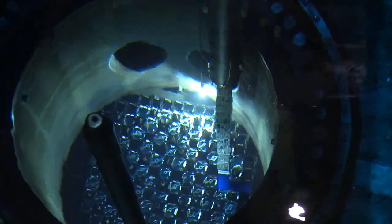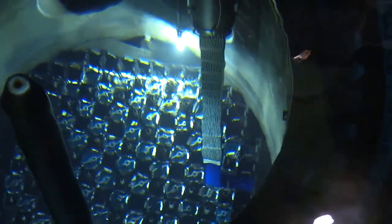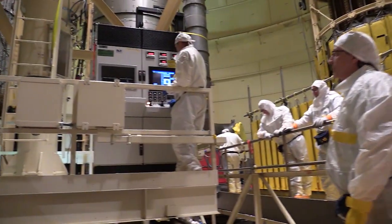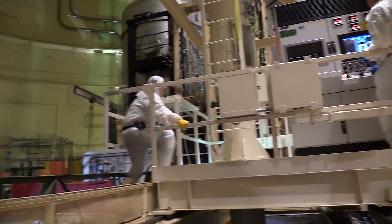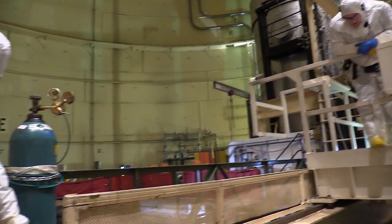204 of these rods are bundled together into what is called a fuel assembly. At Indian Point 2, 193 fuel assemblies make up the reactor core, where the fission process takes place and where the heat is generated to produce steam in the steam generators.